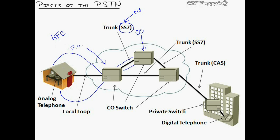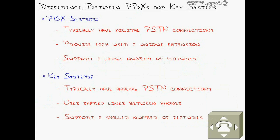On the business side, instead of running a ton of analog connections, we can use a digital trunk using either CAS or CCS signaling, depending on what the carrier supports or what the end user chooses. That comes into a private switch inside the office — either a private branch exchange or PBX system, or a key switch — which then connects to digital telephones. With digital signaling from the desktop through the trunk, we essentially have no analog signaling end-to-end. These digital handsets are proprietary in nature, so an Avaya PBX required Avaya phones to support the digital signaling.